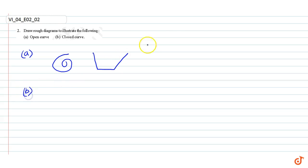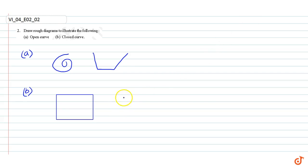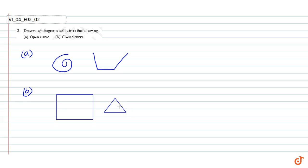Part B: closed curve. This is a closed curve because the shape is closed by line segments. This is also a closed curve because the curve is closed by line segments. This is also a closed curve because the shape is closed by curves. These are our answers.